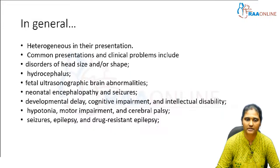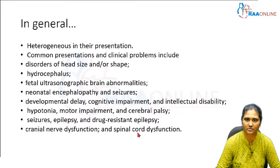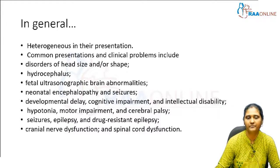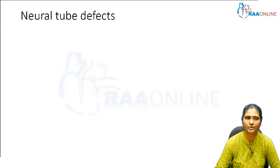Cranial nerve dysfunction and spinal cord dysfunction may also be seen. In general, for all these conditions — neural tube defects, encephaloceles, meningomyeloceles, and all the anomalies — this is the common presentation. Moving on specifically, the most common congenital anomaly of the central nervous system is the neural tube defect.